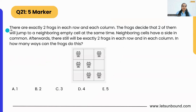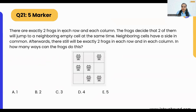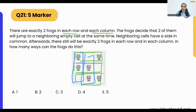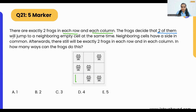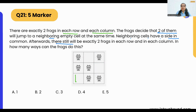Our first question: there are exactly two frogs in each row and each column. You can see this is a row — there are two frogs in this row, two frogs in this one, and two frogs in this one as well. Looking down at a column, there are two frogs, two frogs, and two frogs again. The frogs decide that two of them will jump to a neighboring empty cell at the same time. Neighboring cells have a side in common.